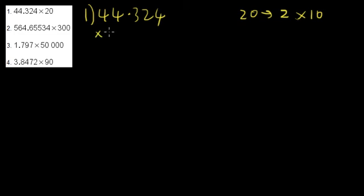So let's work this out. We're going to take my 44.324, I'm going to multiply by 2. So 4 times 2 is 8, 2 times 2 is 4, 2 times 3 is 6, add in our decimal place, 2 times 4 is 8, 2 times 4 is 8.